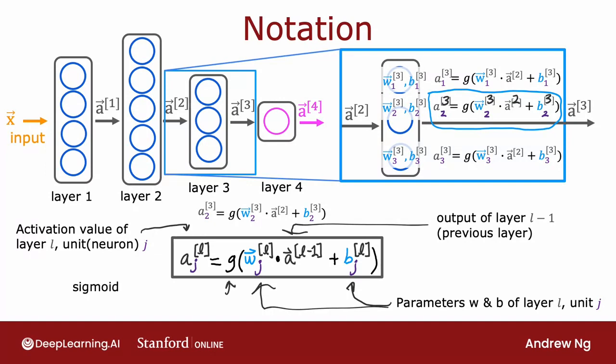G here is the sigmoid function. In the context of a neural network, G has another name, which is also called the activation function, because G outputs this activation value. So when I say activation function, I mean this function G here. And so far, the only activation function you've seen is the sigmoid function, but next week, we'll look at when other functions than the sigmoid function can be plugged in in place of G as well. The activation function is just that function that outputs these activation values.